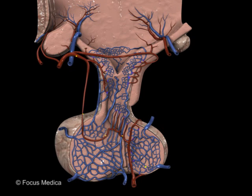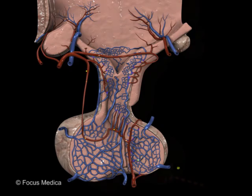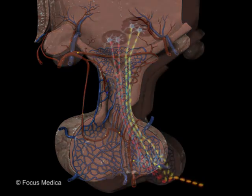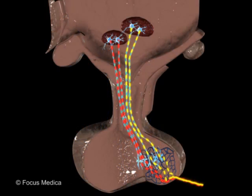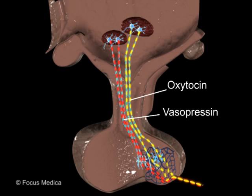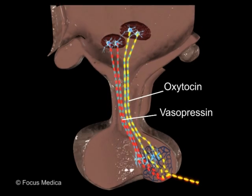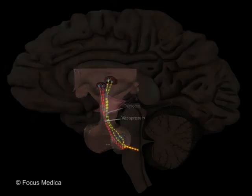A hypothalamo-hypophyseal portal system ensures that specific hormone-releasing and inhibiting factors reach the pituitary. Besides this, the hypothalamus itself secretes some amount of oxytocin and vasopressin.